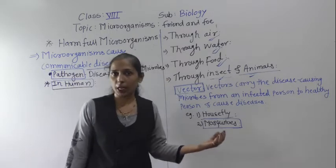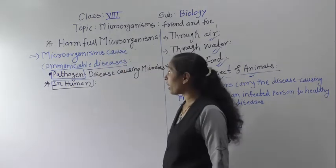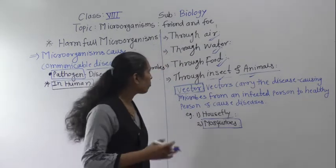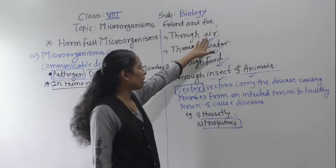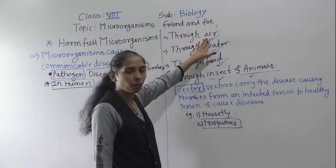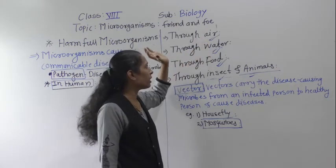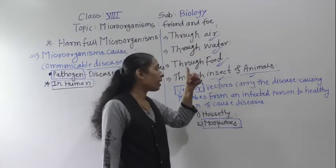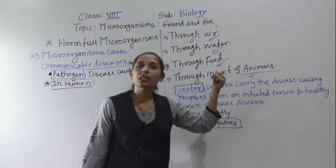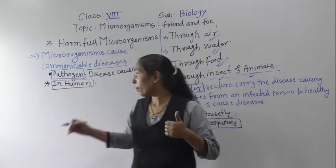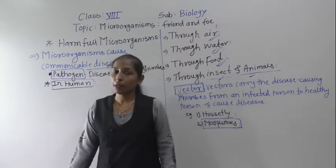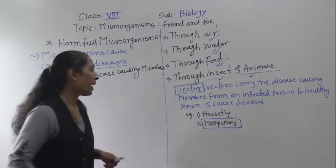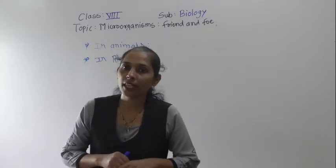So to summarize, communicable diseases in human beings can be spread through air, water, food, and with the help of insects and animals. This is all about communicable diseases in human beings. Now we will discuss communicable diseases in animals.